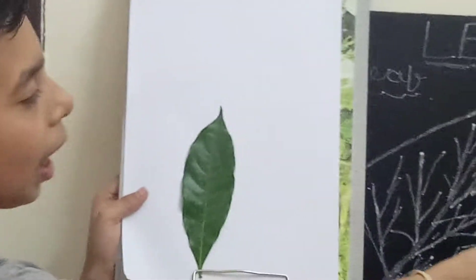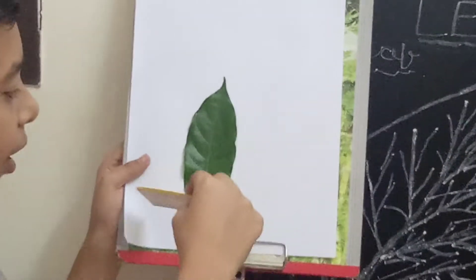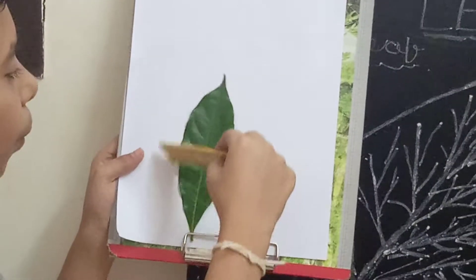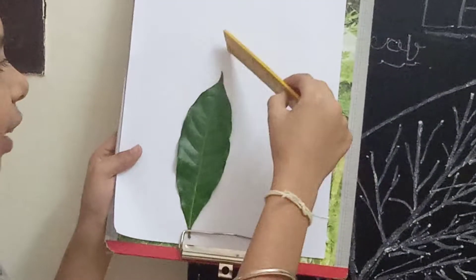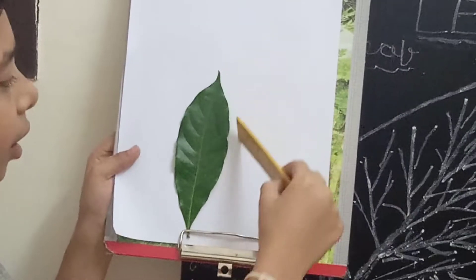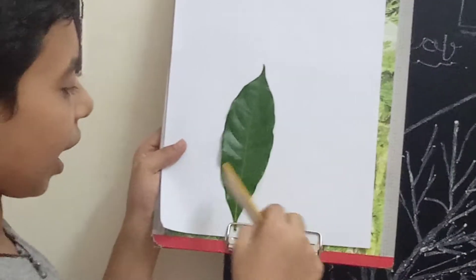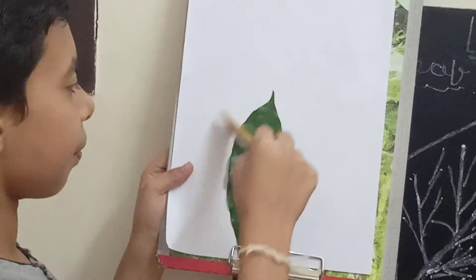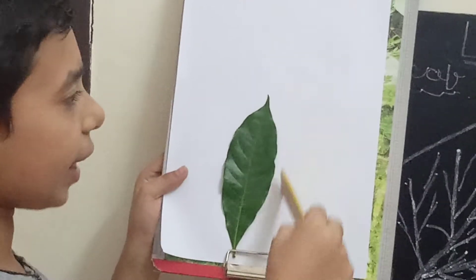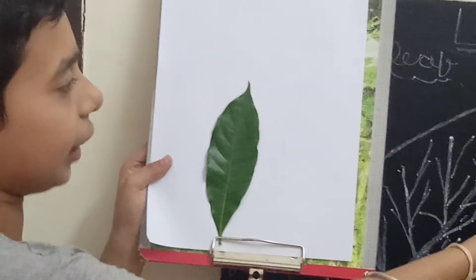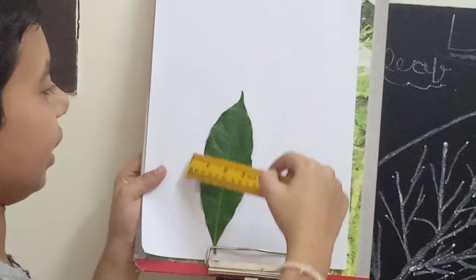Leaf margin. This outer line of a leaf is known as leaf margin. This one.